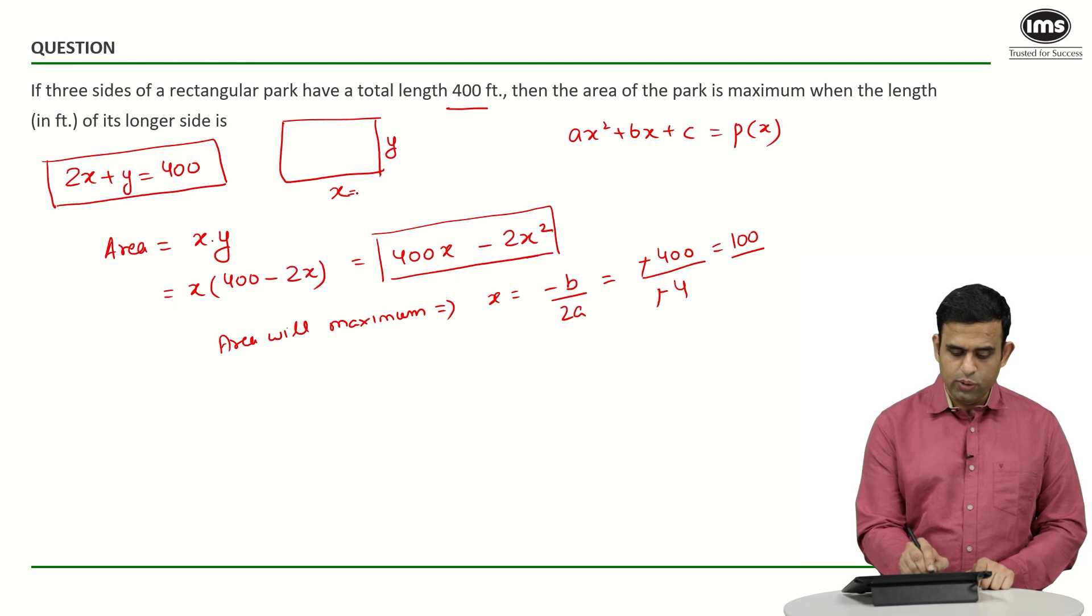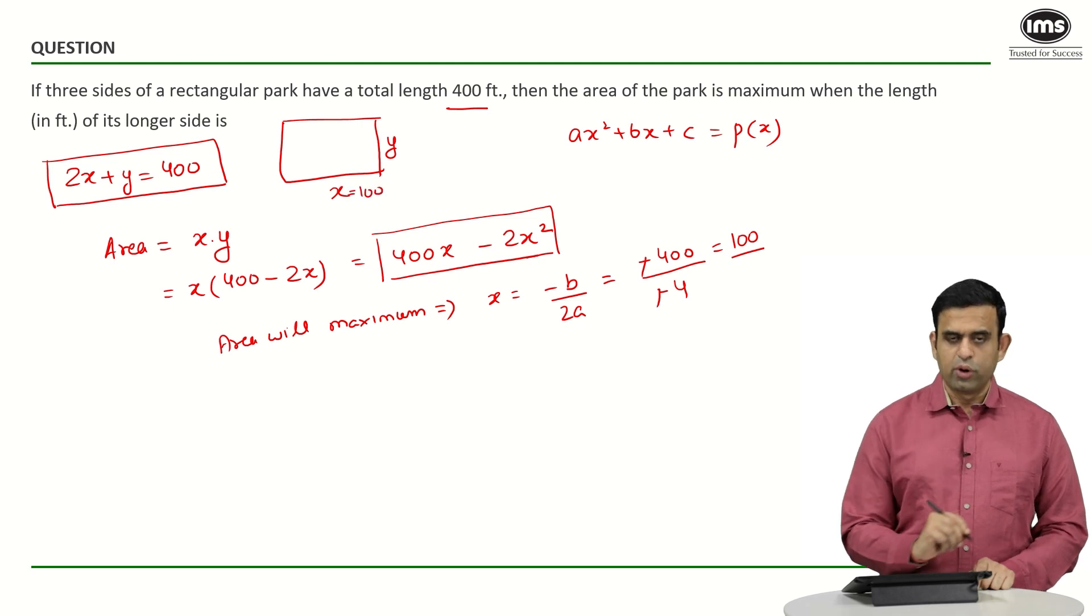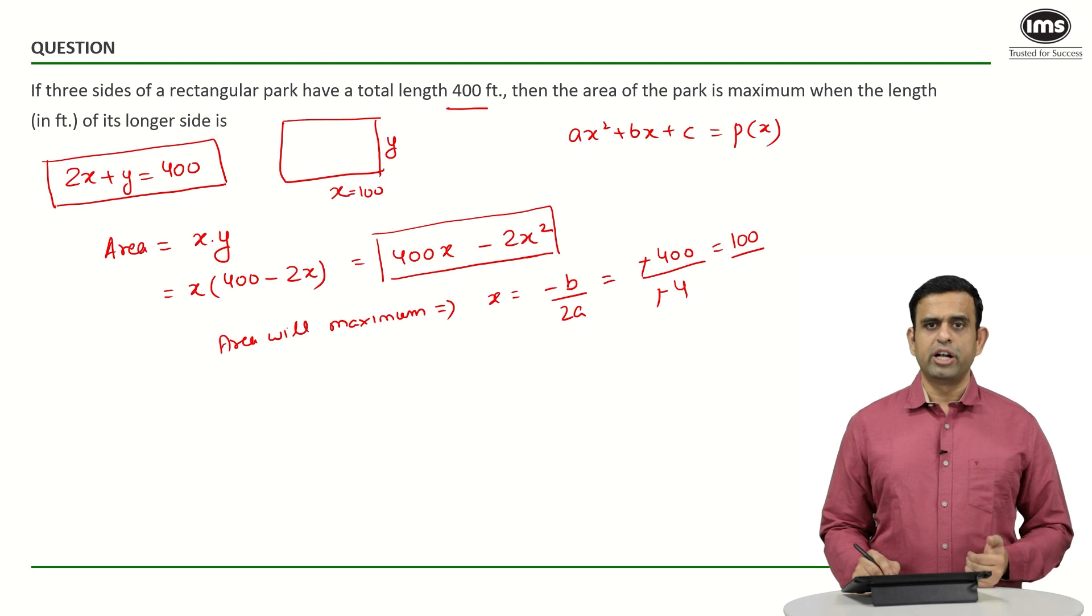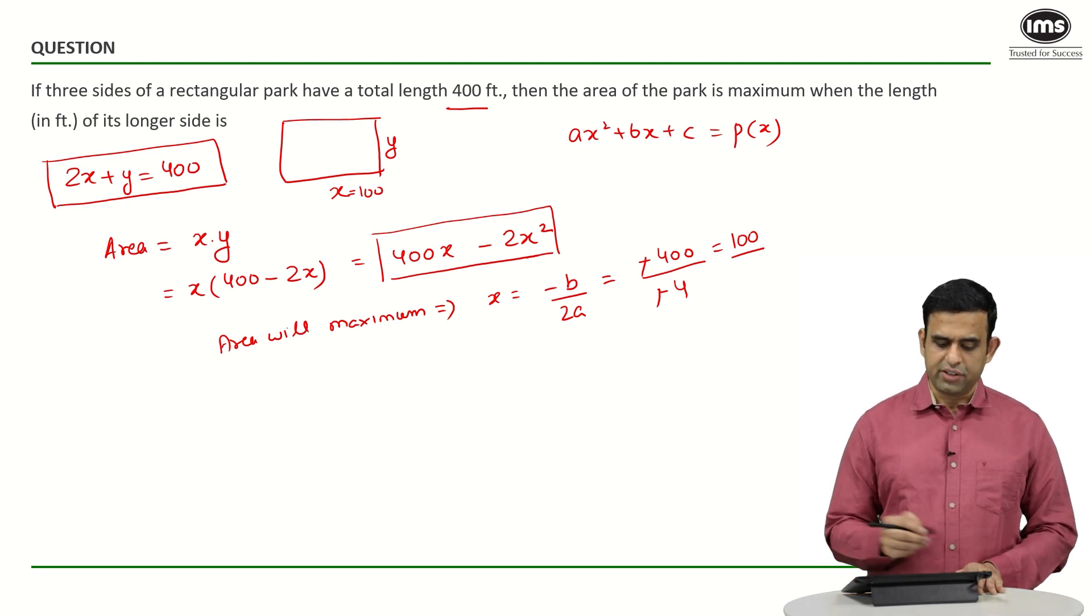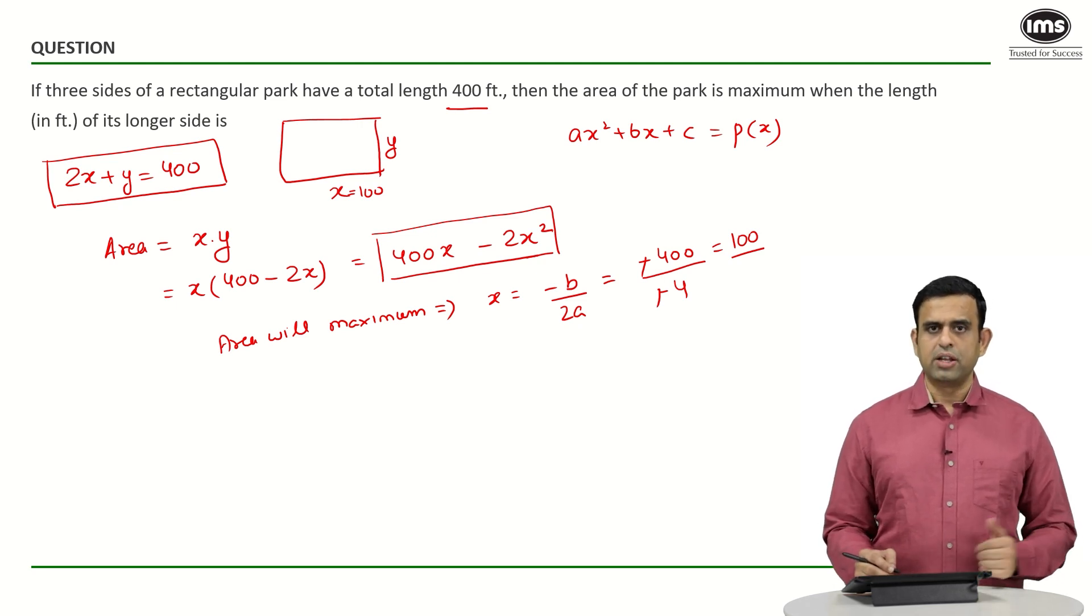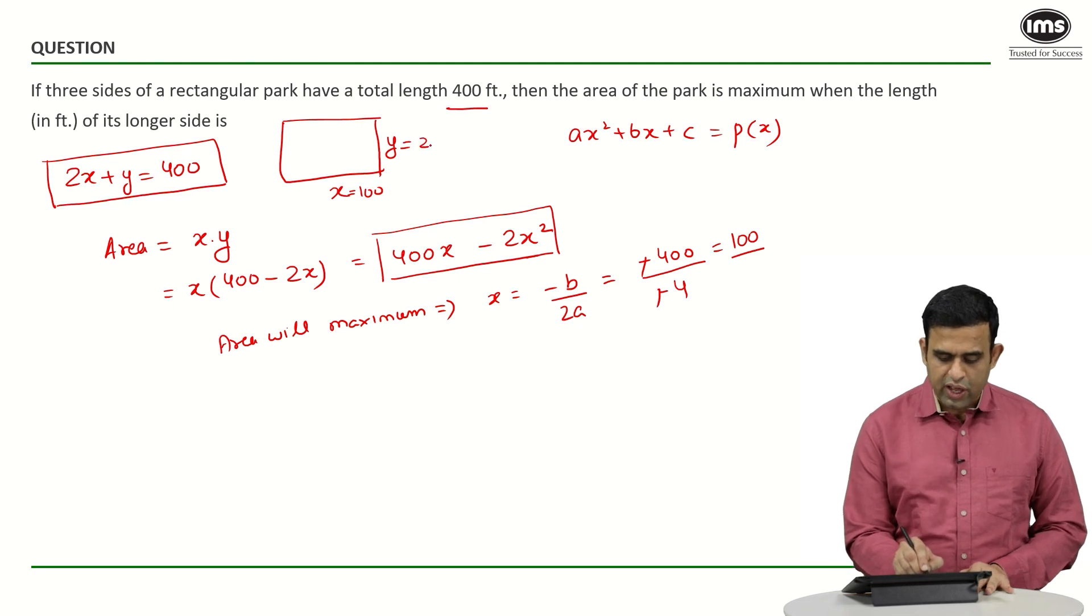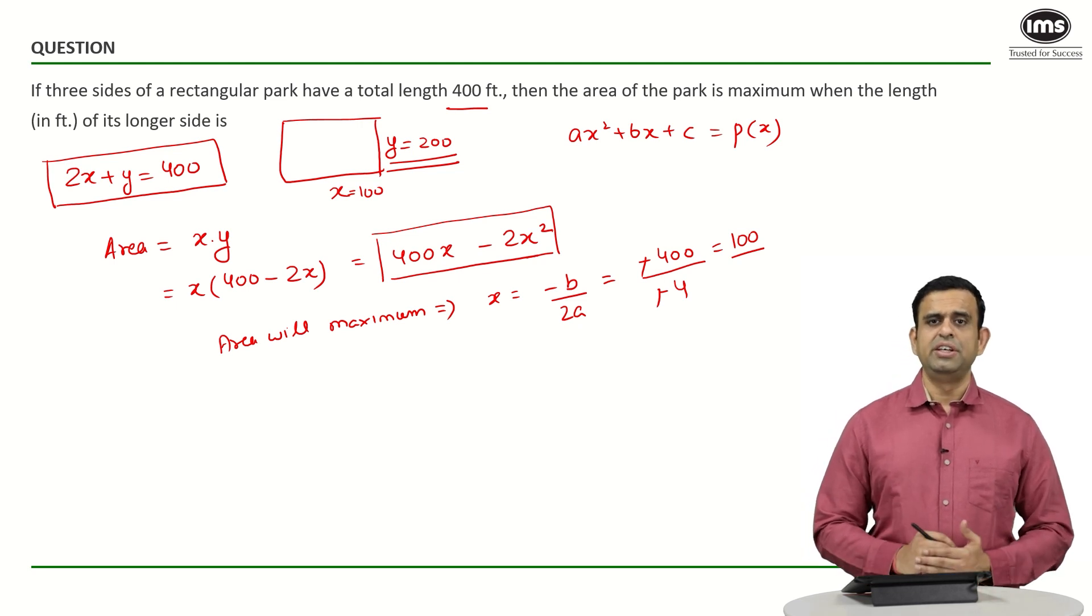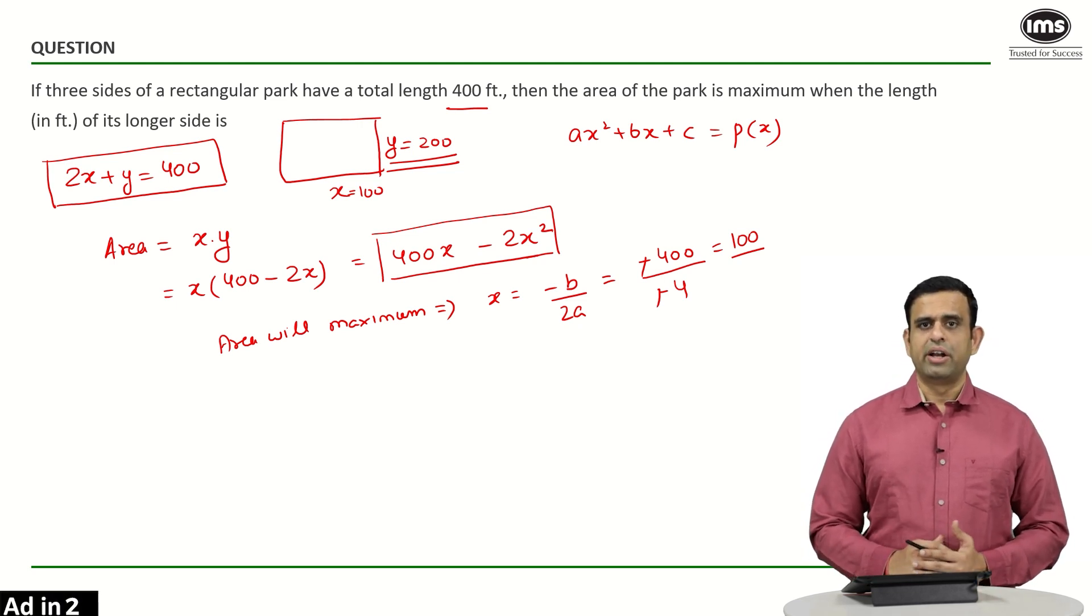So this becomes 100. If the value of x is 100 and I put this in terms of y, because y equals 400 minus 2x, we get 400 minus 200, giving us 200. So y becomes 200, and that is the longer side. Hence my answer is 200, the length which maximizes the area of the given rectangle.